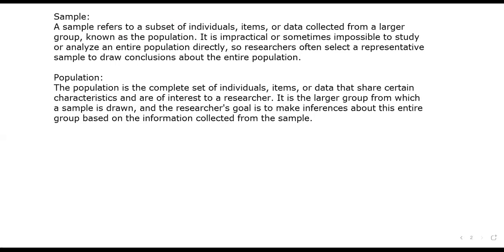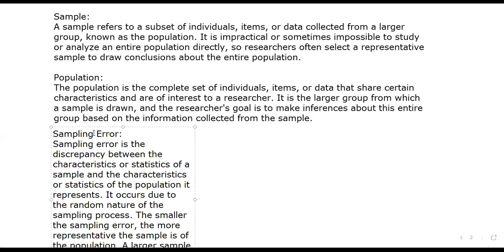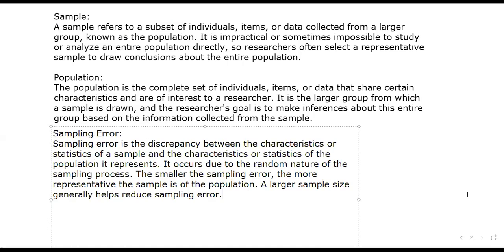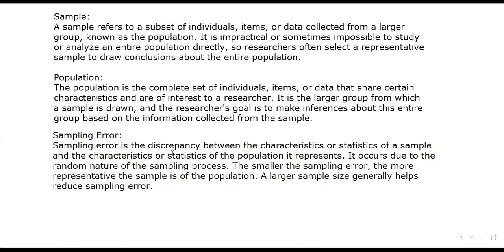Sampling error, by definition, is simply the discrepancy between the actual statistics we would have gotten if we went through the actual population and the sample itself. For example, if the mean of the actual population is 5 and we use the sample mean of 4.25, that 0.75 difference is the sampling error.